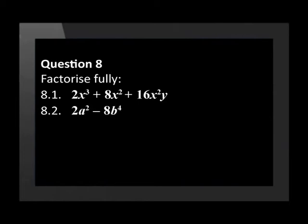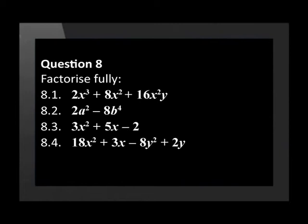Time for question 8. Factorize fully. 8.1 is 2x cubed plus 8x squared plus 16x squared y. 8.2 is 2a squared minus 8b to the power of 4. 8.3 is 3x squared plus 5x minus 2. 8.4 is 18x squared plus 3x minus 8y squared plus 2y. 8.5 is 54 times x to the power of 5 times y minus 250 times x squared times y.